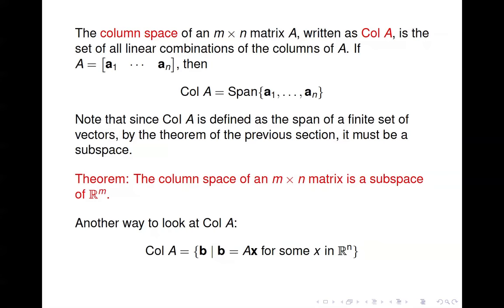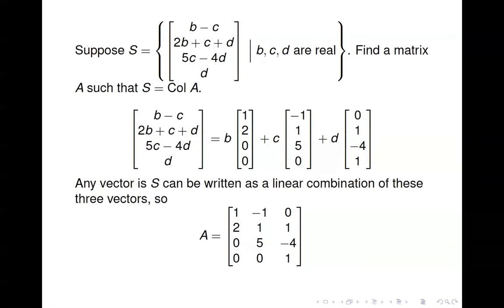Another way to look at the column space of A is to write it as the set of all b such that b equals Ax for some x in ℝⁿ, because when you multiply A times x you're simply taking a linear combination of the columns of A. Given a set S defined in terms of a generic vector, to find a matrix A such that S equals col(A), we take that generic vector, write it in parametric vector form as a linear combination of vectors, and put those vectors into the columns of a matrix.